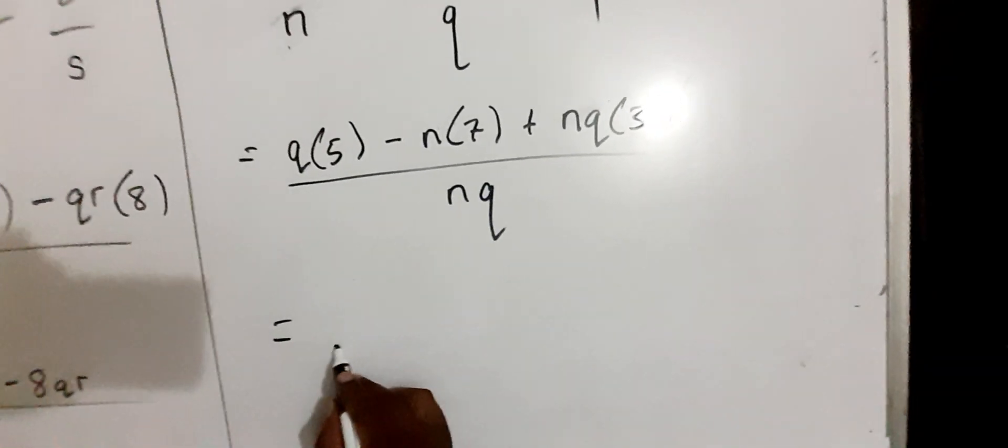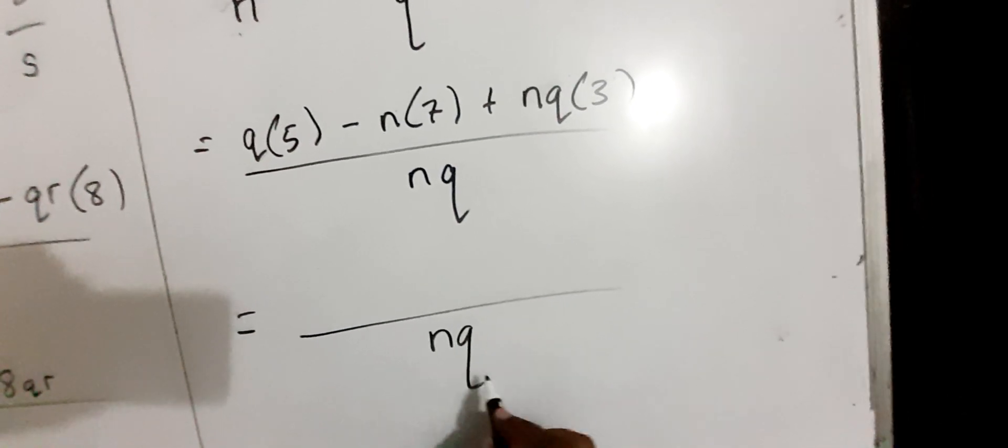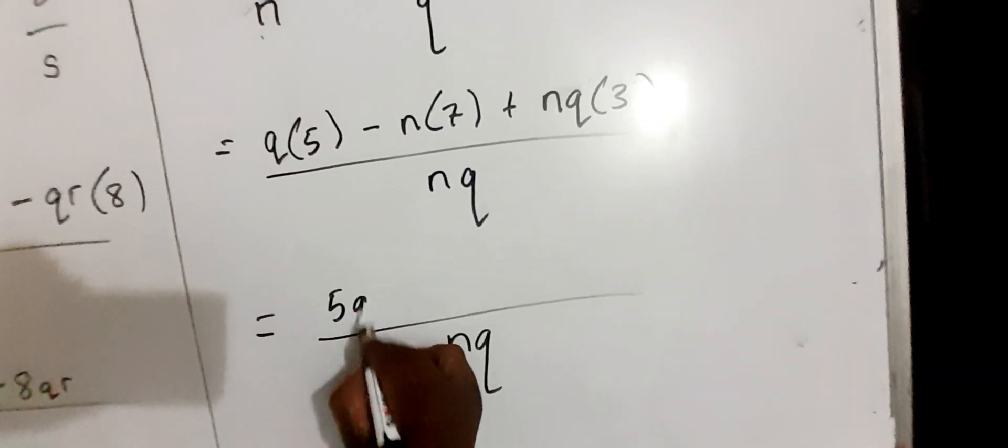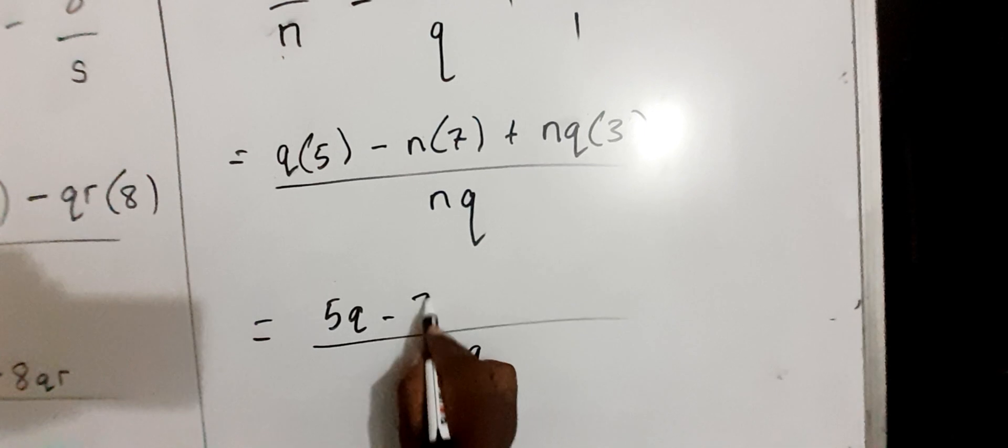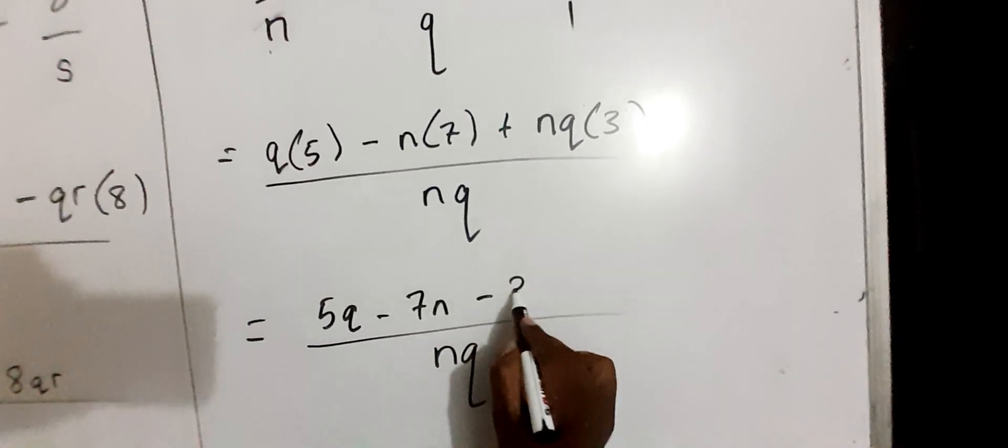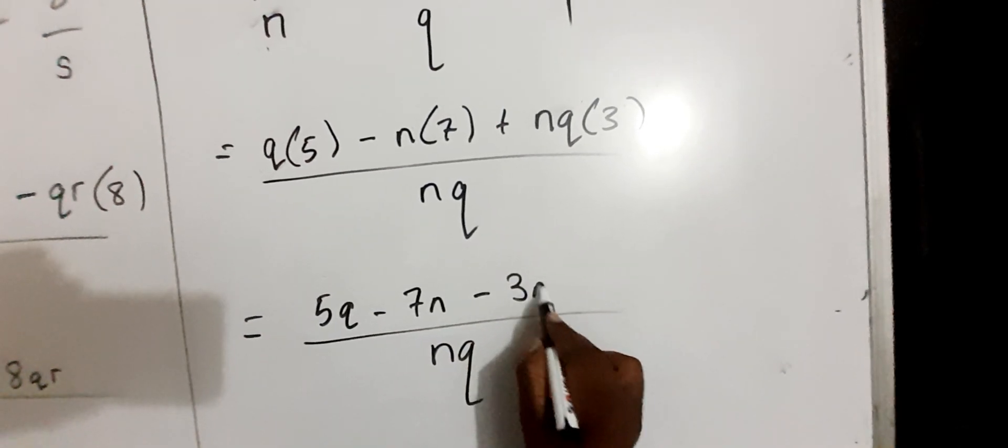As a result, we are going to have the following: 5Q minus 7N minus 3NQ.